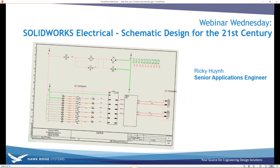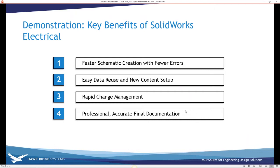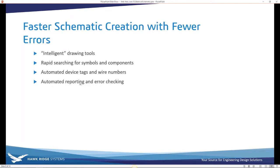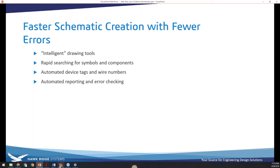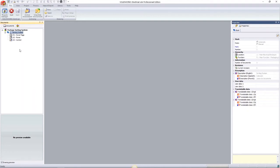Let's dive into SOLIDWORKS Electrical Schematic Design. The key benefits are: faster schematic creation with fewer errors, easy data reuse and new content setup, rapid changes, and outputting professional, accurate final documentation. We'll cover this in three sections: intelligent drawing tools, symbols and components, automatic device tags and wire numbers, and automated reporting and error checking.